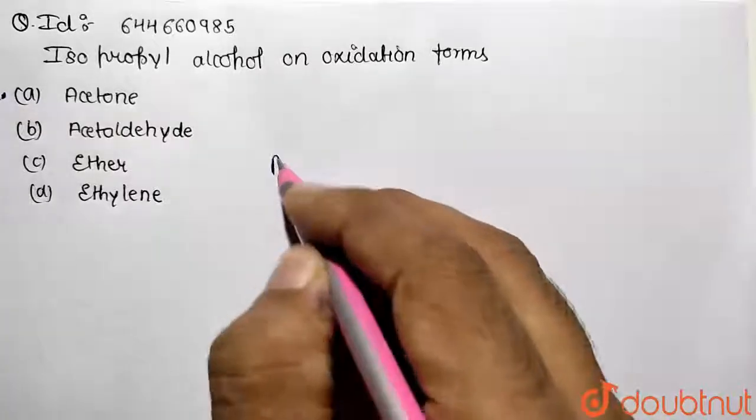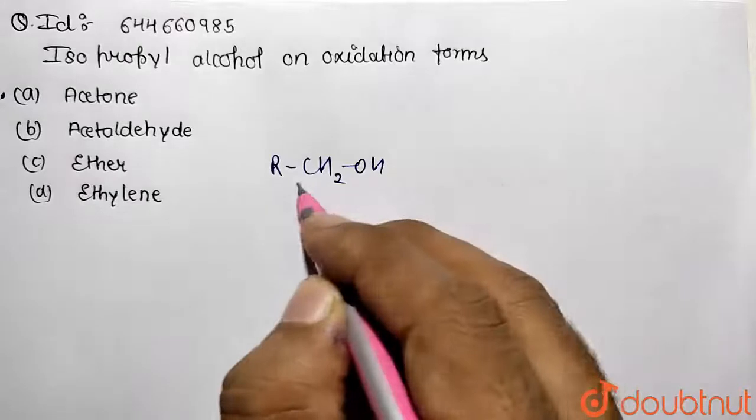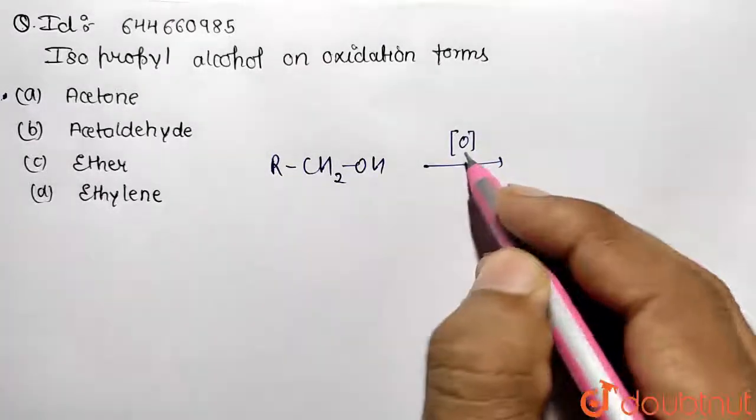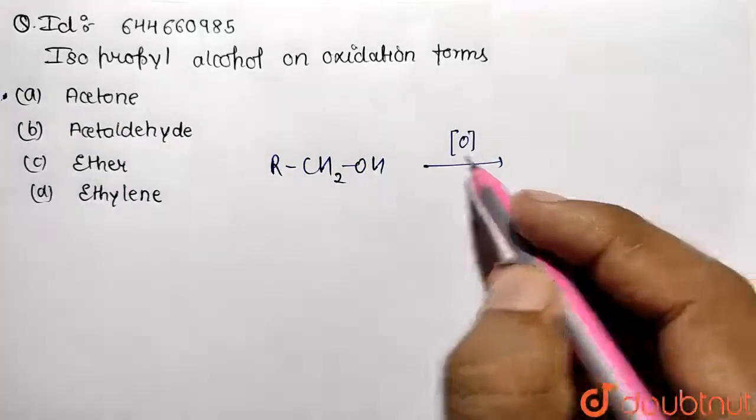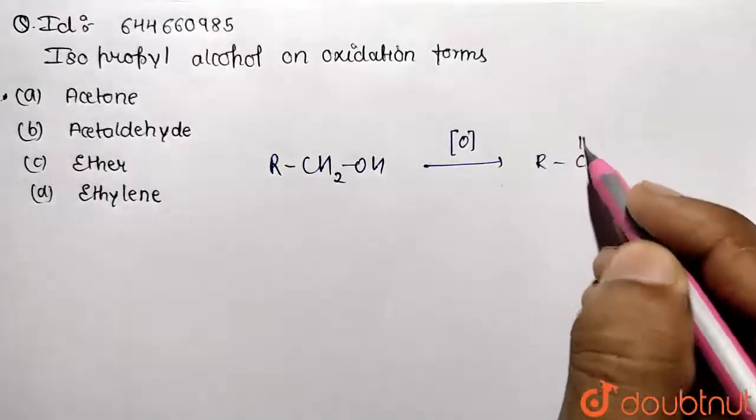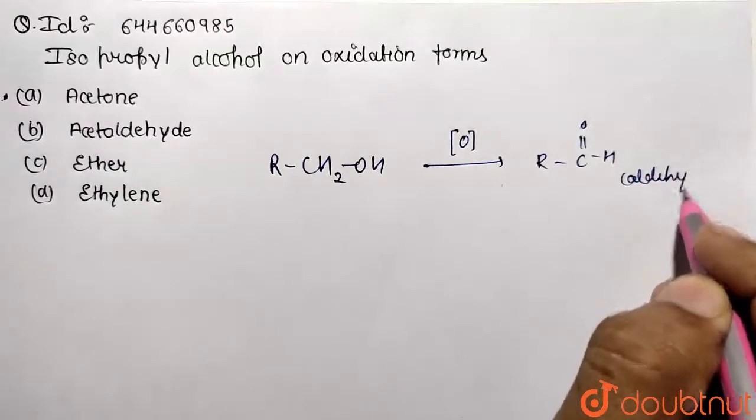If we are taking the primary alcohol RCH2OH, this is primary alcohol with one methyl group present. If we are doing the oxidation in presence of strong oxidizing agent, then correspondingly primary alcohol will be converted to aldehyde. R-C double bond O-H, this aldehyde will be formed.